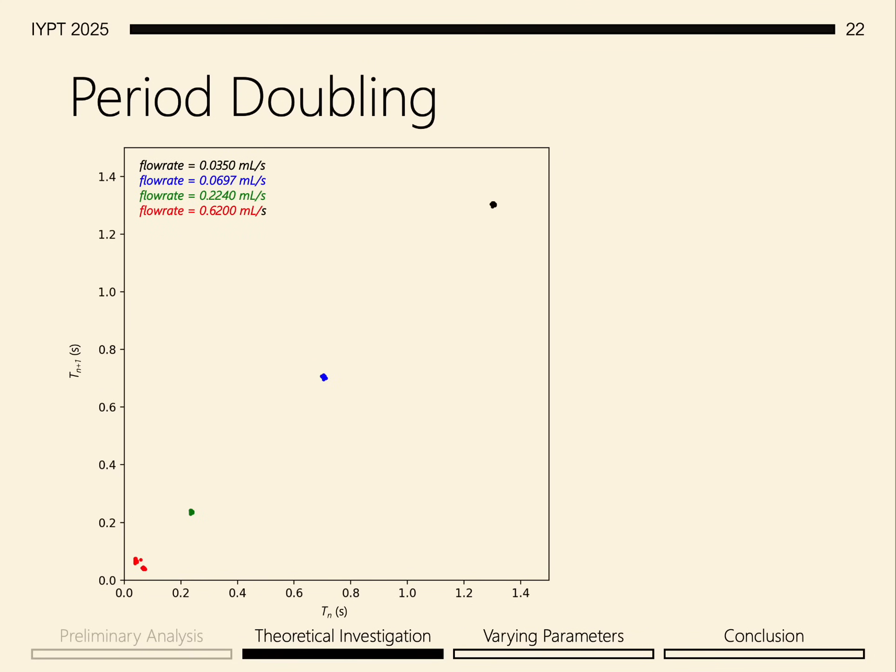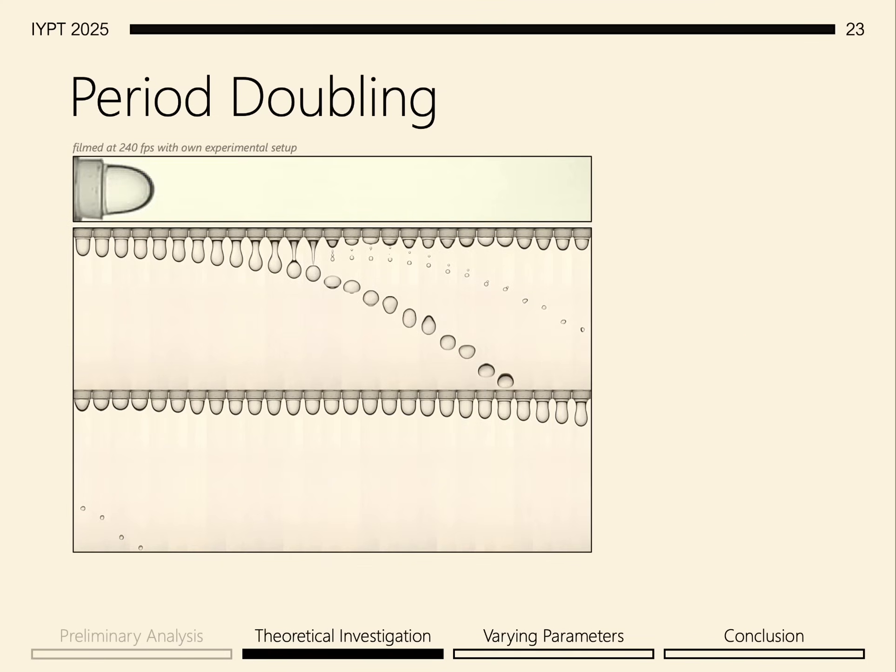We can use this data and plot it on a Poincare graph. Notice that at higher flow rates, indicated by the red, we observe a kind of period doubling, where we have a shorter time followed by a longer time. Why is this? Why are the times not the same like we observe at lower flow rates?